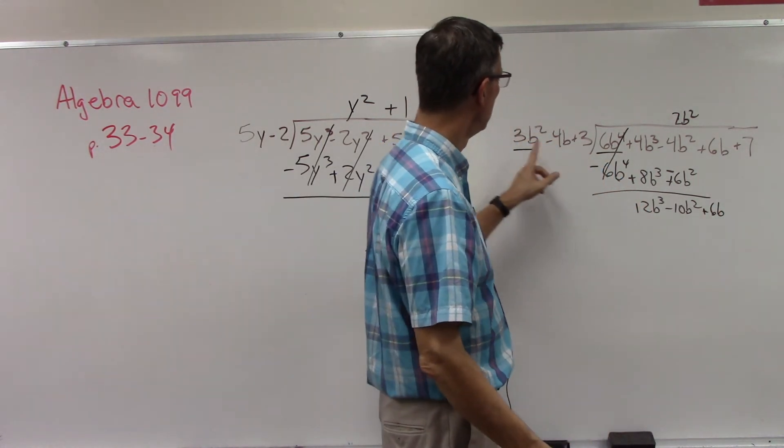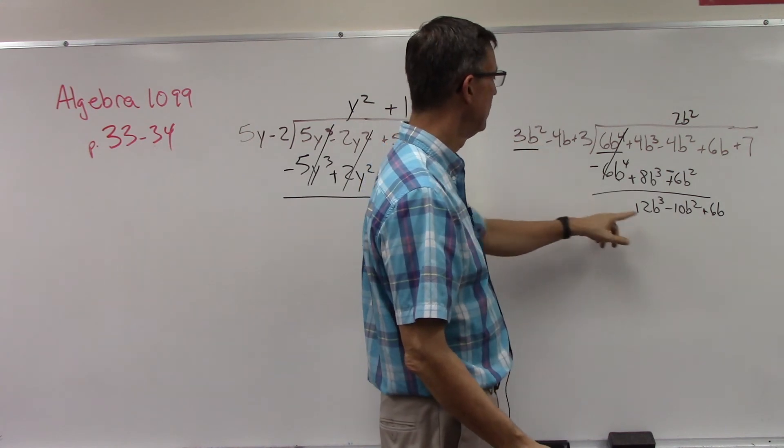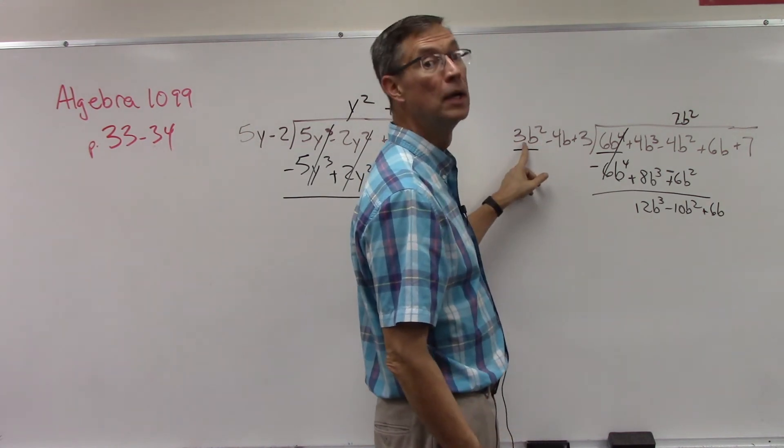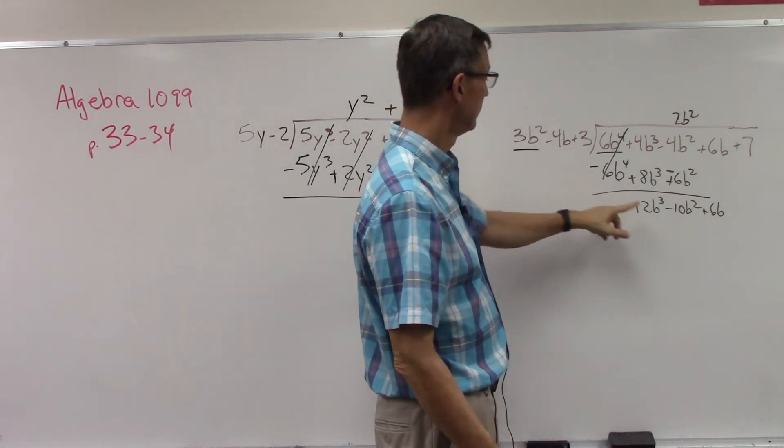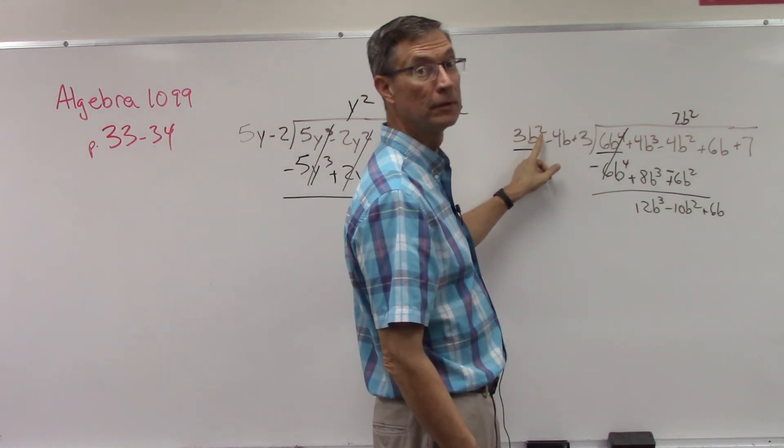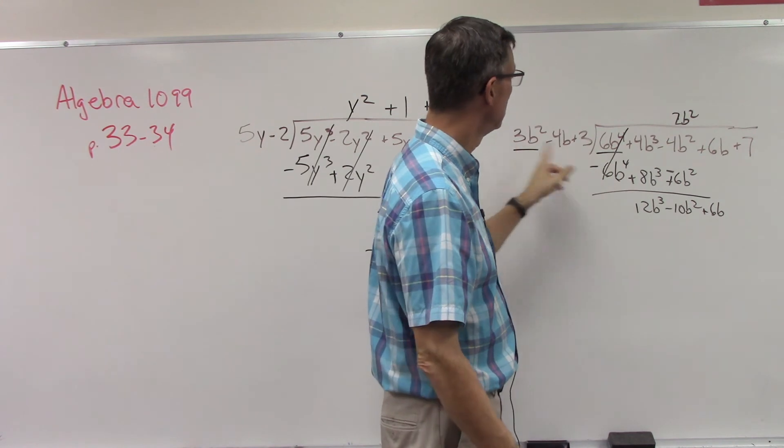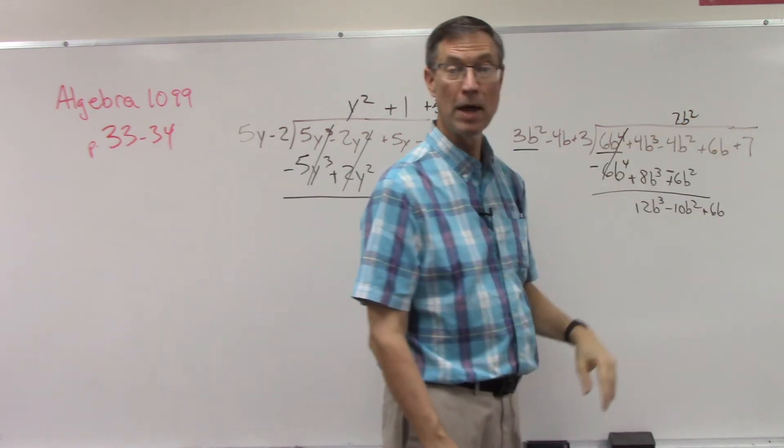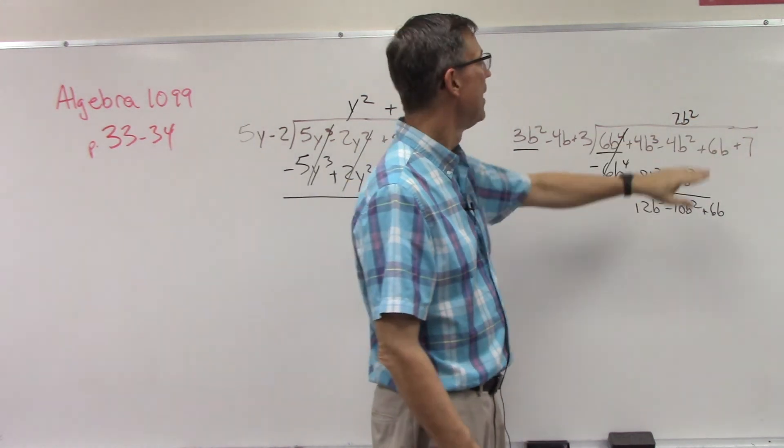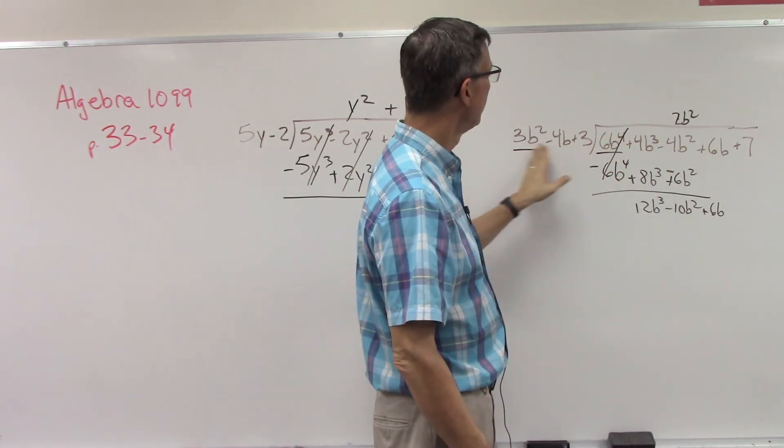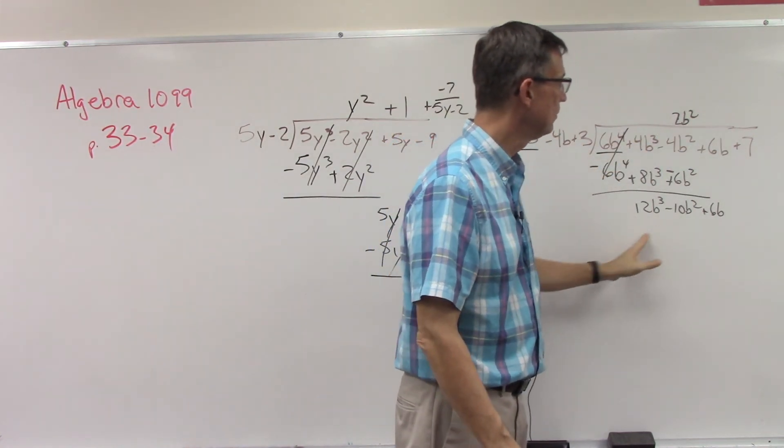So the 12b to the third divided by 3b squared, 12 divided by 3 is... okay, subtract the exponents. Okay, so that's what you write up here and they're both positive, so this will be plus that term that you came up with. Take that times all three of these, change them to their opposites, add.